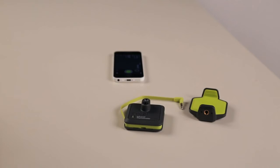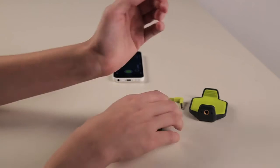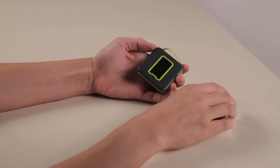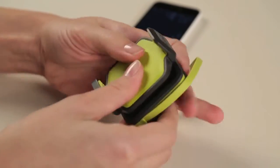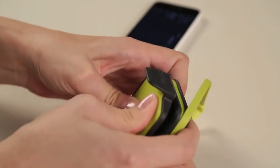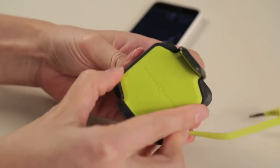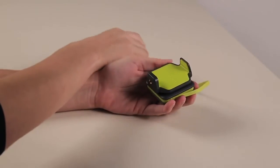To attach the phone clip to the infrared thermometer, line up the hook and loop sides of the clip to the matching side of the device. Press in the center of the clip with your two thumbs to attach. Once you hear a click, check for a tight hold of the clip to the thermometer.